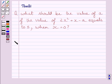Let us now start with the solution. First of all, we will find out the value of the given algebraic expression at x equals 0. So we can write, substituting x equals 0 in 2x squared plus x minus A, we get